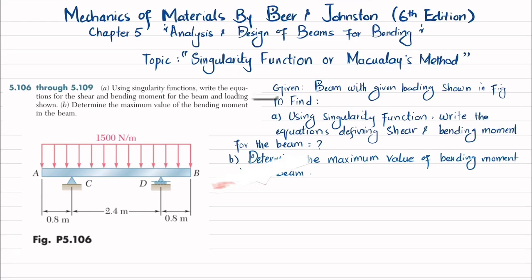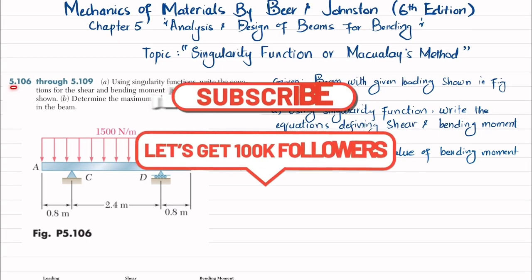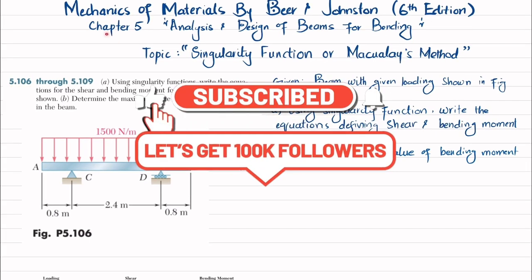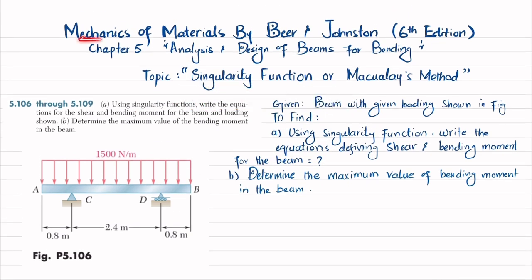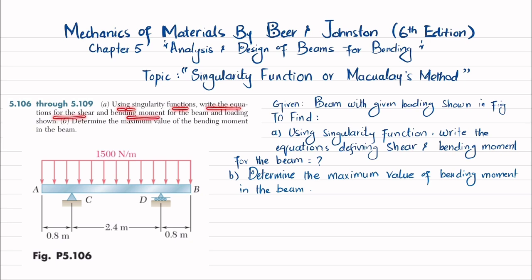Welcome back. Problem 5.106. This problem is taken from chapter number 5, Analysis and Design of Beam for Bending. The book name is Mechanics of Material by Bayer and Johnson, 6th edition. The topic that we are covering is Singularity Function or McAuley's Method. Using the singularity function, write the equation for shear and bending moment for the beam and loading shown.